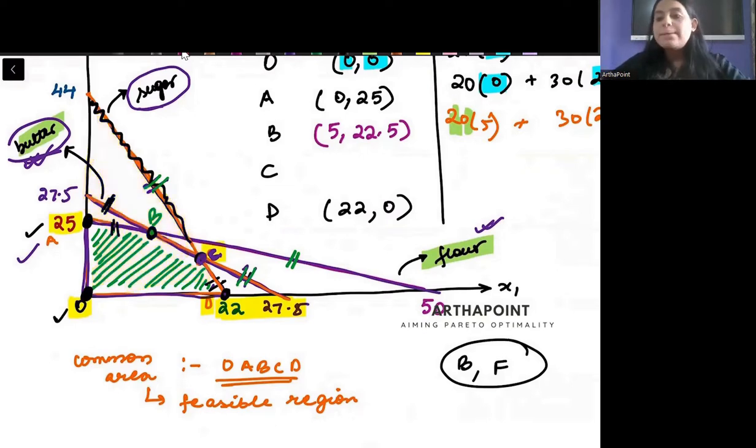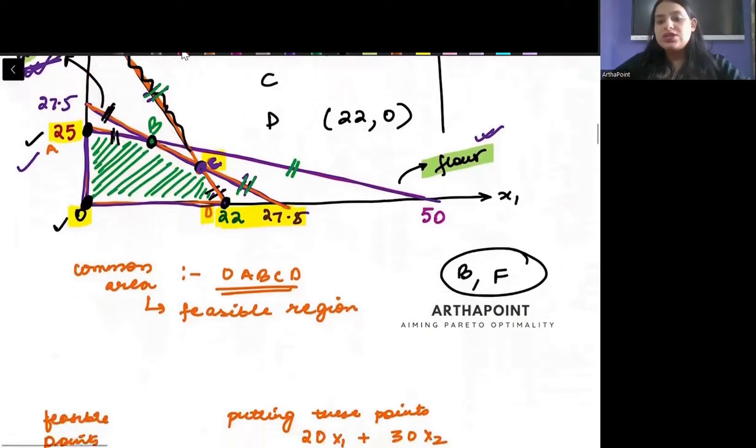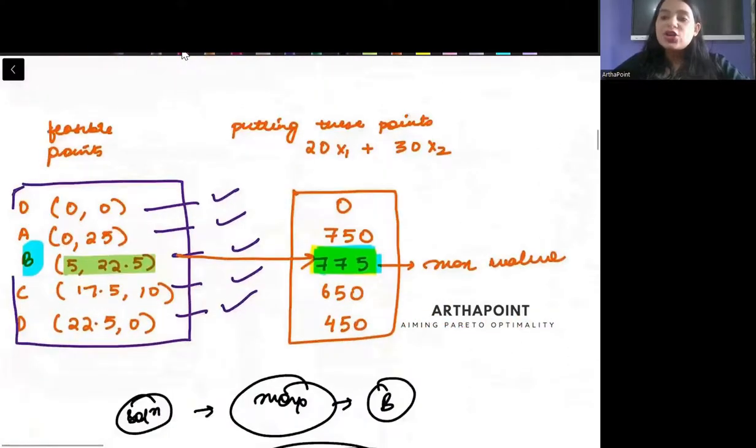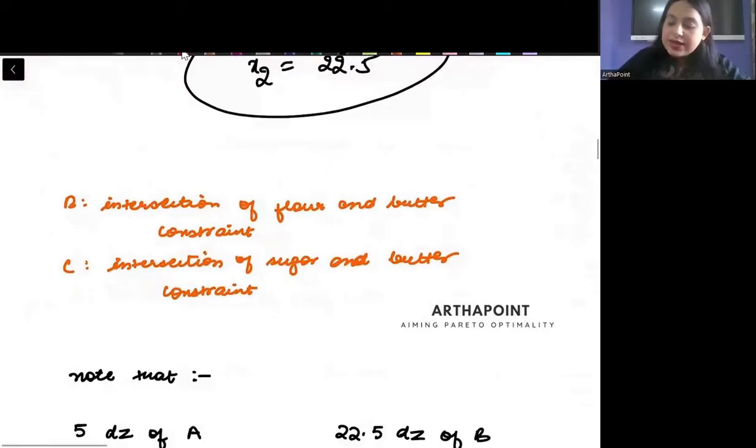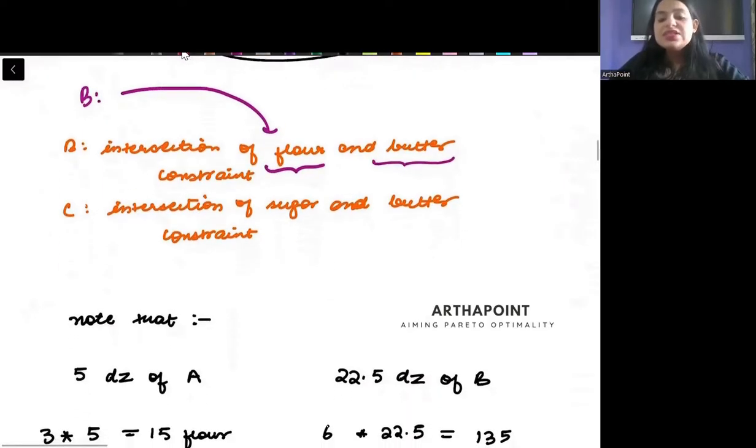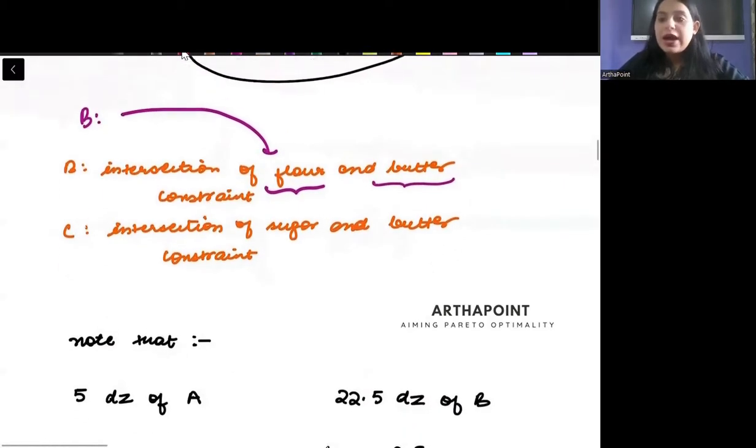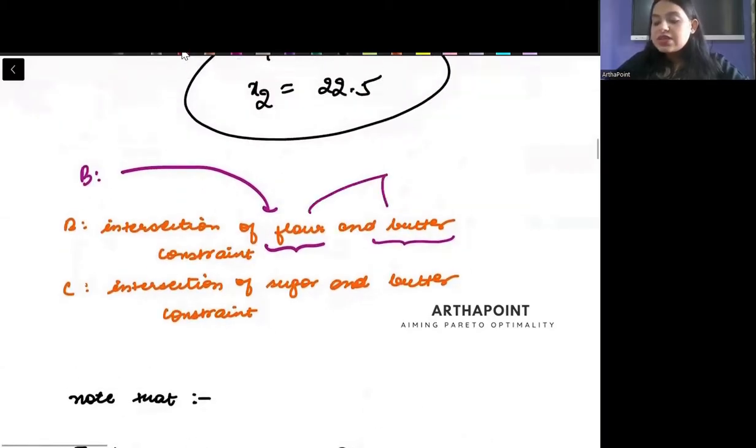I am inside this constraint, so sugar is not completely being utilized, only being partially utilized. This is a very important conclusion that at point B, you see that it is the intersection of flour and butter. And since it is the intersection of flour and butter...